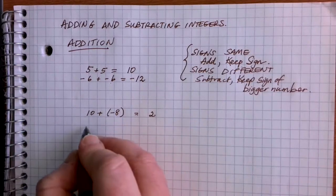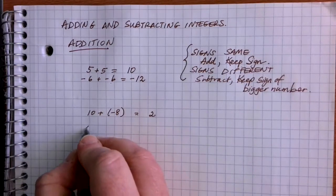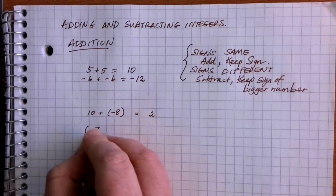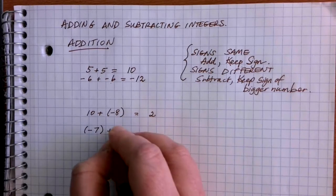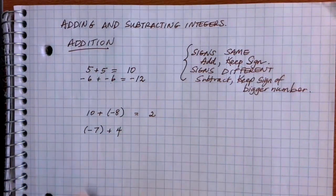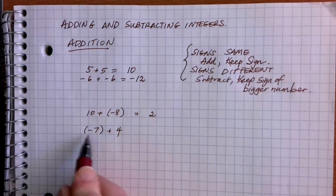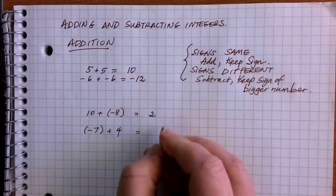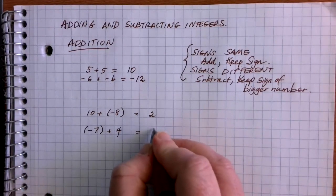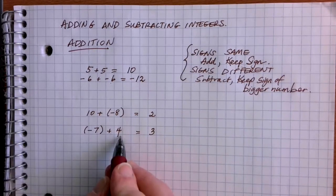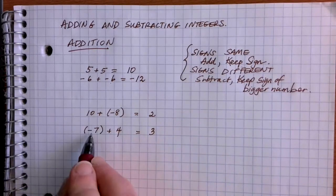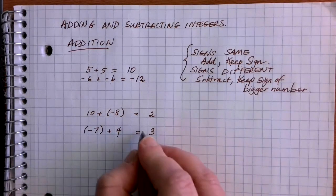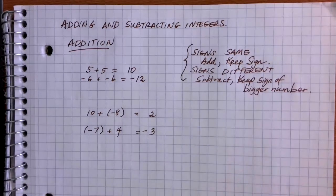If we do something like negative 7 plus 4, again our signs are different — we have a negative number and a positive number. We subtract the values: 7 minus 4 is 3, and we keep the sign of the larger number. 7 is bigger than 4, and 7 was negative, so our answer is negative 3.